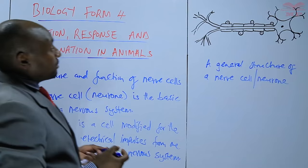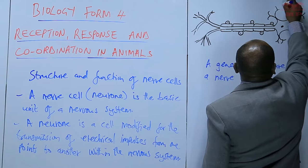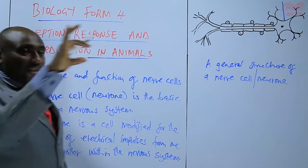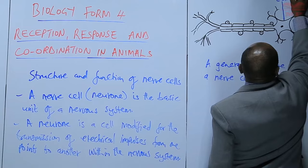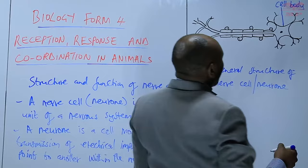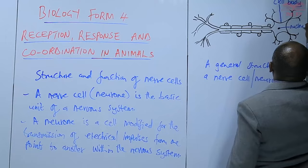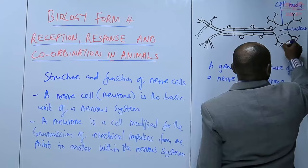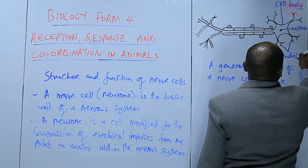There is the part that looks like a head, which is the equivalent of a cell. We refer to it as the cell body. That cell body has a nucleus. A cell body containing the nucleus. Then that cell body also has some extensions — we call those extensions dendrites.